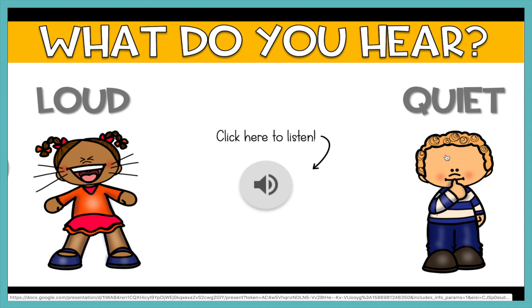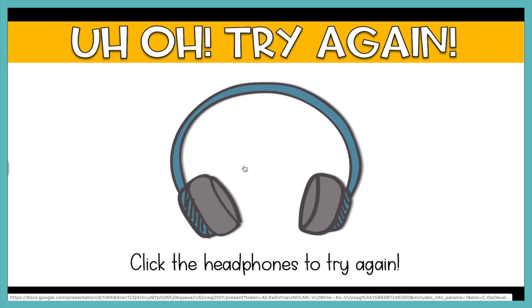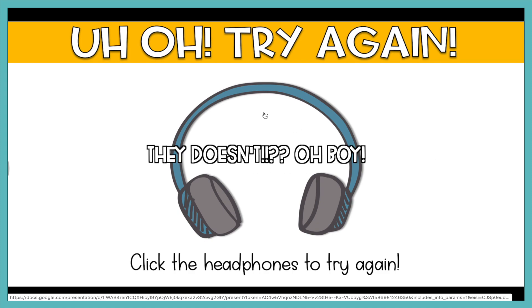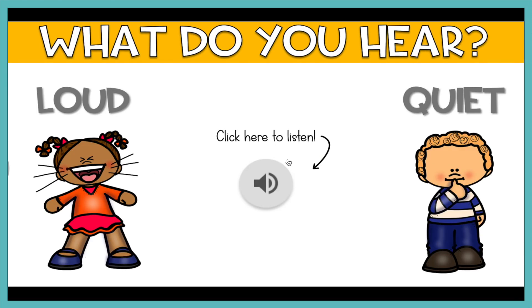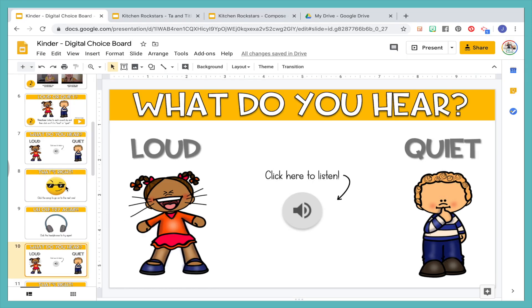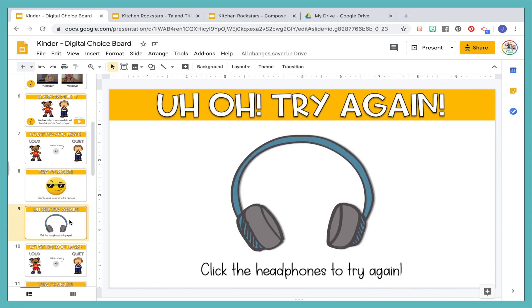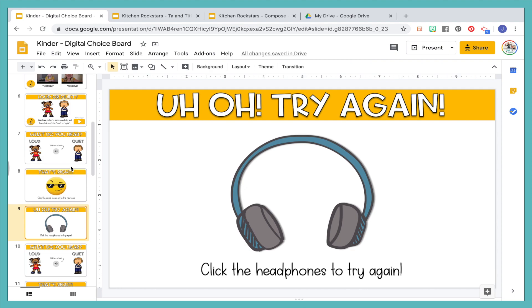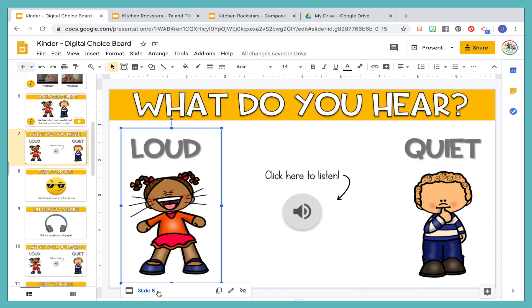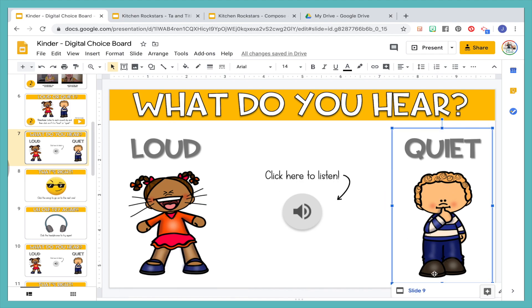Let's say that they say it's quiet. Let's see if they're right. It's not. So they have to click the headphones to go back. Loud — they did a good job, then they go to the next one. So how do you manage all of that for it to make sense? You're going to have the initial question and then you're going to have the two options it can go to — either 'That's right' or 'Try again.' So my little girl here is linked to slide eight because that's the right answer. The little boy is the wrong answer, so it's going to go to slide nine.